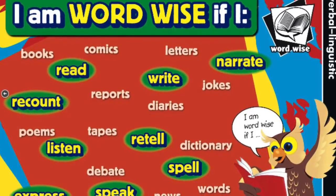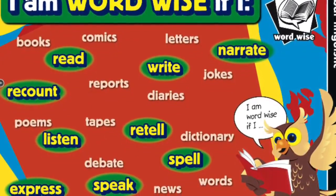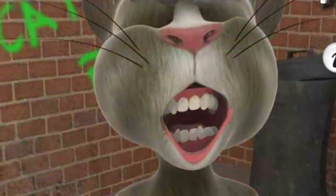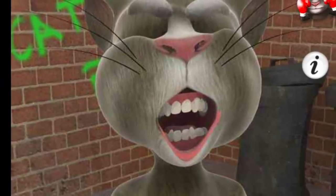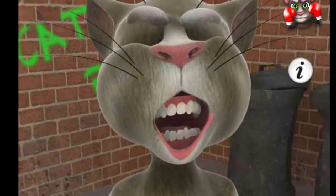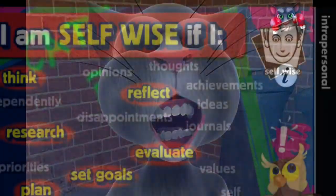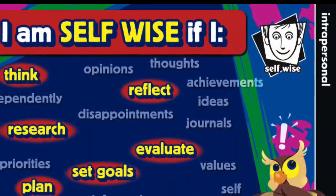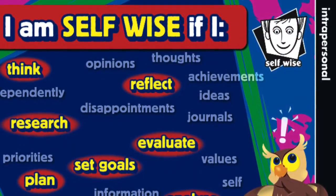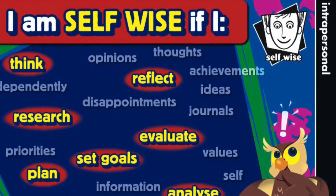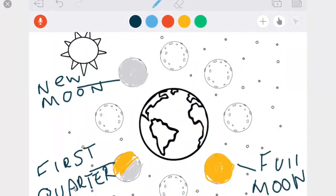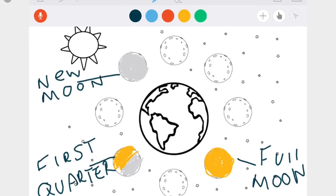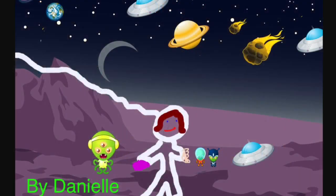Verbal linguistic students learn best when talking out loud. So to help these students, they're going to use the Talking Tom app to summarize ideas such as why there are different seasons. Interpersonal learners are those students that love to work independently. Through this unit, they will thrive in their responses to questions by writings or drawings via edu-creation and doodle-buddy.